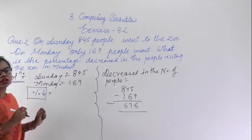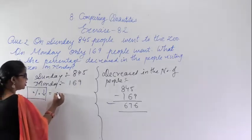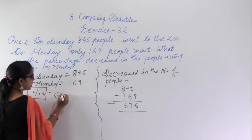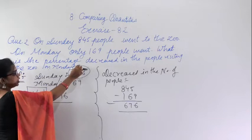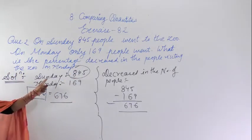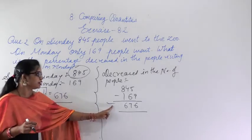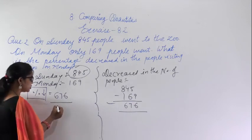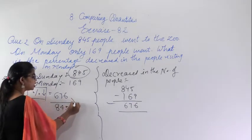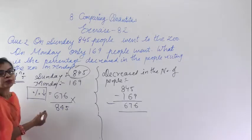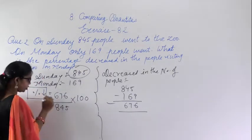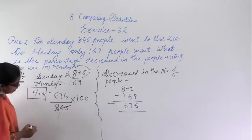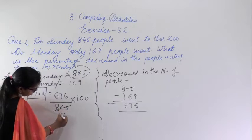Now we have to find out the percentage decrease. Percentage decrease means the total decreased number of people upon the total number of people. We are taking the total as 845 — the people who went on Sunday — as our reference. So percentage decrease equals 676 upon 845 into 100. Now we cancel: dividing by 5 gives 169 in numerator terms, and we can cancel by 13.